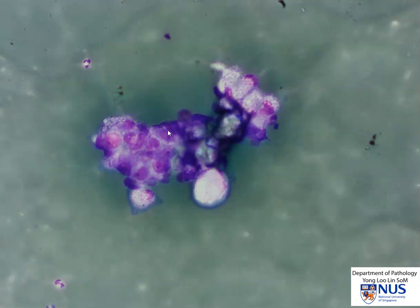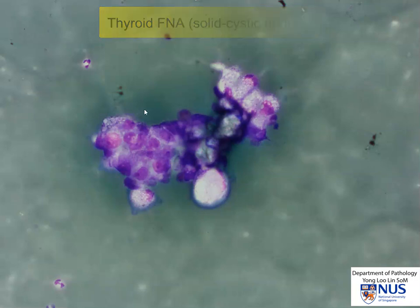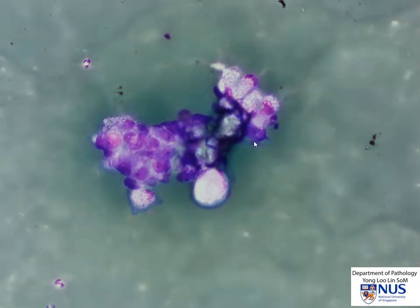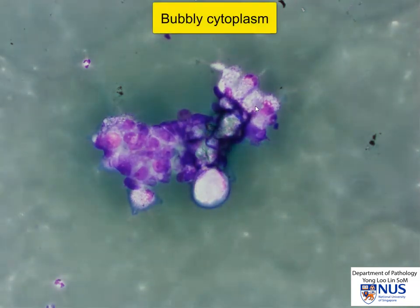Here is an FNA taken from a solid cystic thyroid nodule, and this is the air-dried smear. We can see a rather tight cluster of cells with very bubbly cytoplasm.